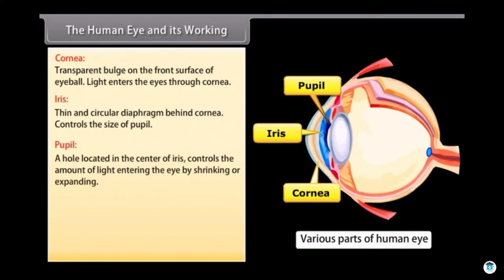Pupil: It is a hole in the center of iris that appears black and controls the amount of light entering in the eyes by shrinking or expanding.